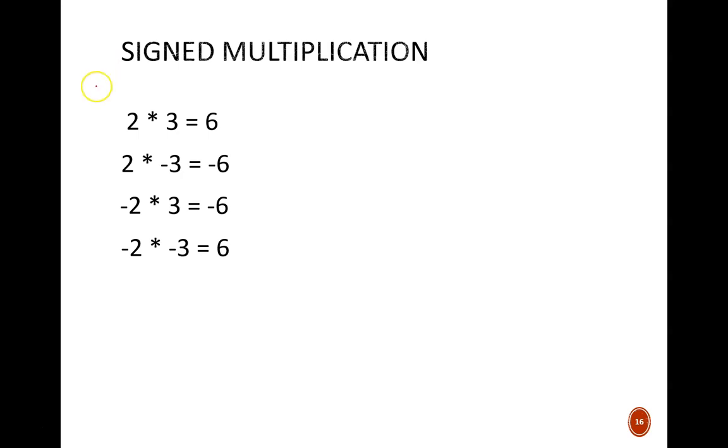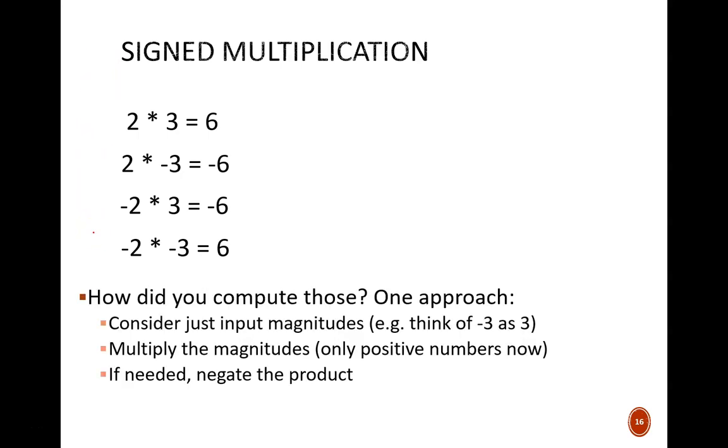Simple enough. Now what approach did you use in your head to compute those products? The approach that I used was to consider just the magnitudes of the input numbers. So when I saw negative 3, I thought of it as positive 3. Then I multiplied those magnitudes, which are two positive numbers.